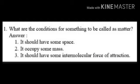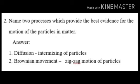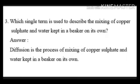Now for questions and answers. Question 1: What are the conditions for something to be called matter? It should occupy some space, have some mass, and have some intermolecular force of attraction. Question 2: Name two processes which provide the best evidence for the motion of particles in matter. Answer: Diffusion — the intermixing of particles — and Brownian movement — the zigzag motion of particles. Question 3: Which single term describes the mixing of copper sulphate and water in a beaker on its own? Answer: Diffusion.